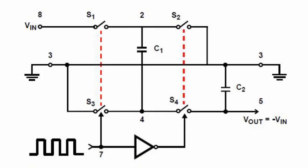With the closure of the keys S1, S3 and opening of S2, S4, the first half cycle charges the external capacitor C1 from the source up to the supply voltage.